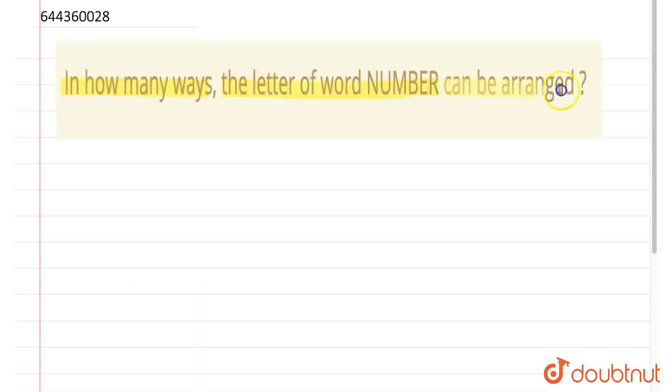So we have a word NUMBER - N U M B E R. How many letters are there in the word NUMBER? There are one, two, three, four, five, six letters. So NUMBER consists of six letters and all letters are distinct, which means they are not repeated. We can see no letter is repeated.